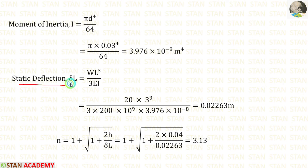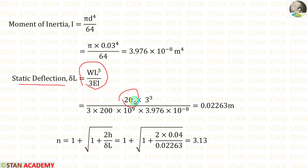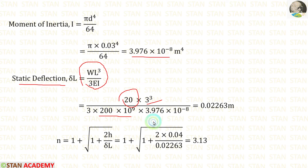Now let us calculate the static deflection. In the given cantilever beam, the load is acting at the free end. If a point load is acting on the free end, the formula for maximum deflection is WL power 3 divided by 3EI. Applying the values: W is 20 Newton, L is 3 meter, E is 200 into 10 power 9, and the moment of inertia we just calculated. After that, we get 0.02263 meter.